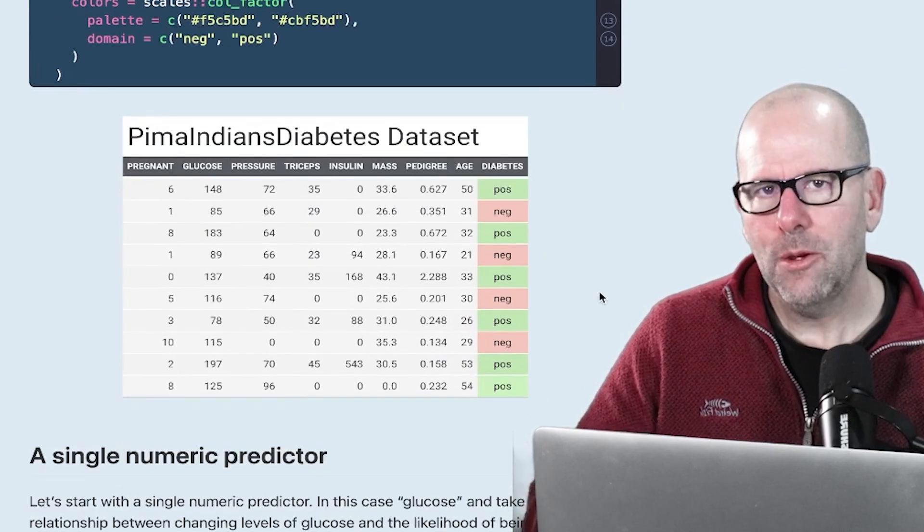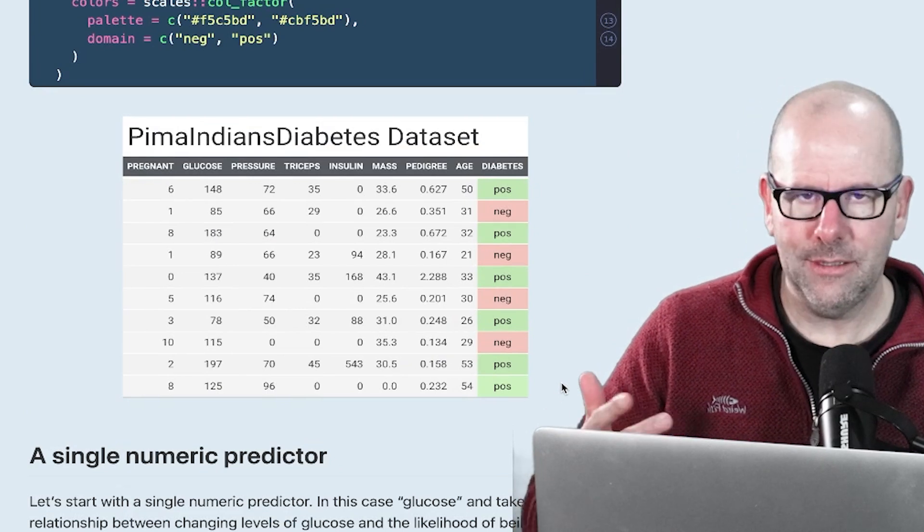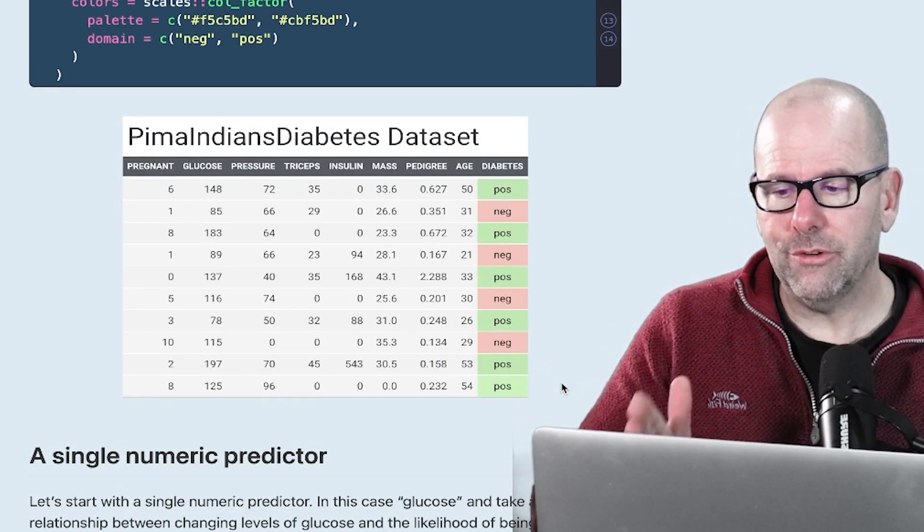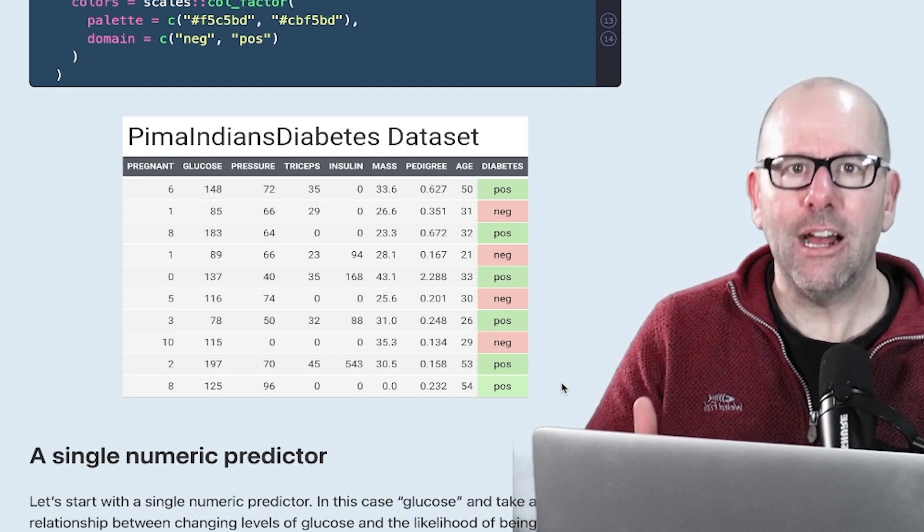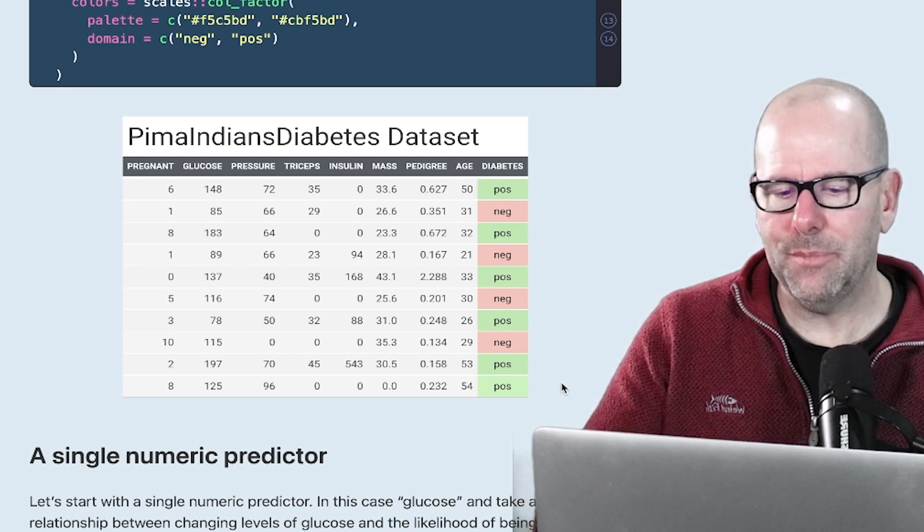Here's the first 10 lines of the data. We're particularly looking at diabetes as an outcome variable. Logistic regression, just in case you don't know, always has a binary outcome variable: yes, no, black, white, male, female, up, down.